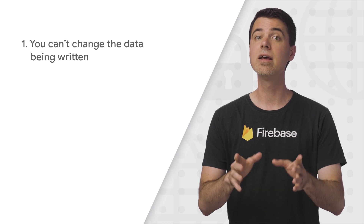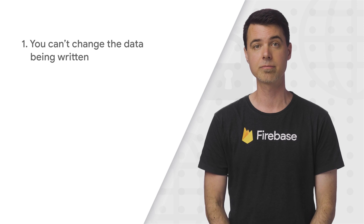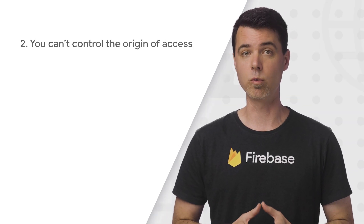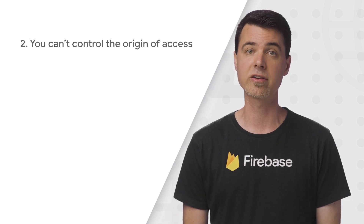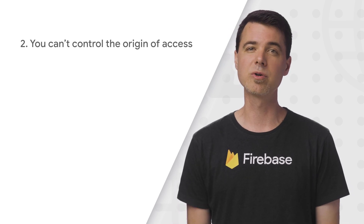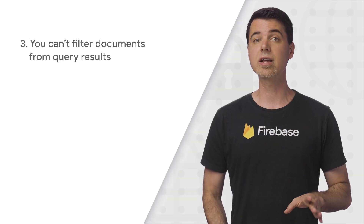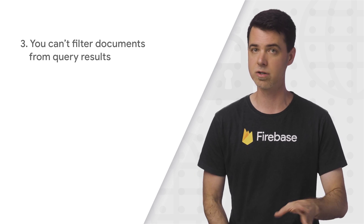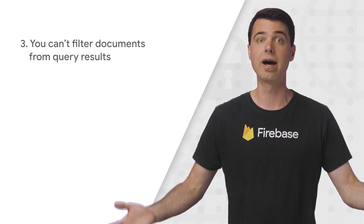If you need to do something like that, consider using Cloud Functions to trigger some code that modifies the data after the write finishes. You also can't check to see if access is coming from your app or website. Firebase products are generally intended to be accessible from anywhere there is internet access, and there are public REST APIs as well. It's just not possible to control the origin of a request using security rules. One common misunderstanding about security rules is that they don't act as query filters on your documents in Firestore, so you can't write a rule that ever changes the outcome of a query other than denying it entirely.